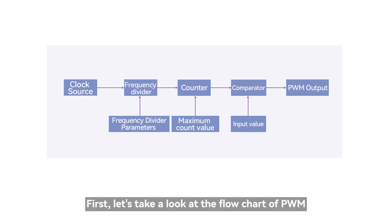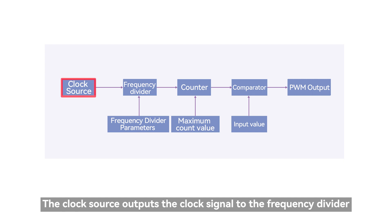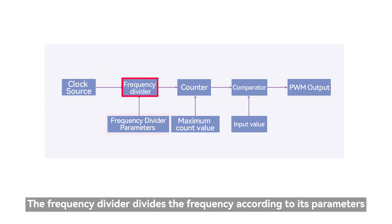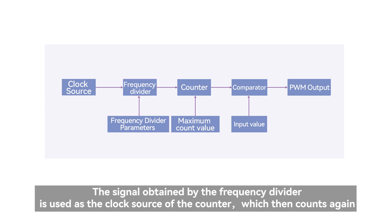First, let's take a look at the flow chart of PWM. The clock source outputs the clock signal to the frequency divider. The frequency divider divides the frequency according to its parameters. The signal obtained by the frequency divider is used as the clock source of the counter, which then counts again.